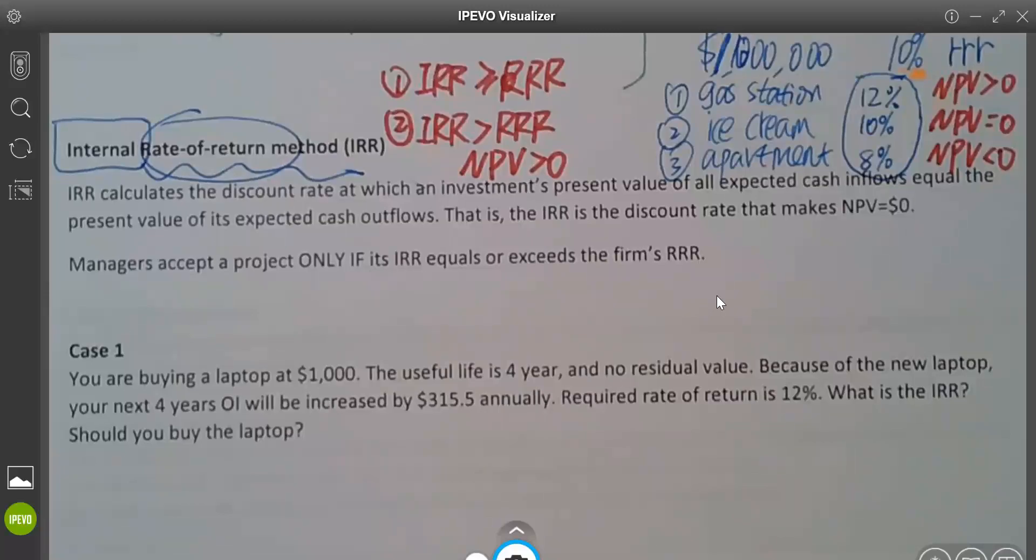Hello everyone, welcome back. In this video, we continue with Accounting 312, Chapter 21 on Budgeting. Last time, we used a very short video talking about IRR.